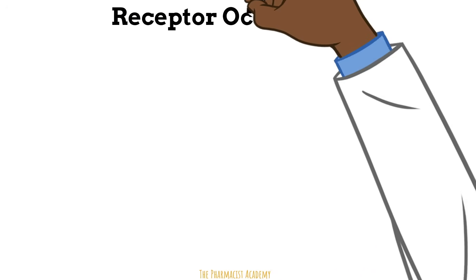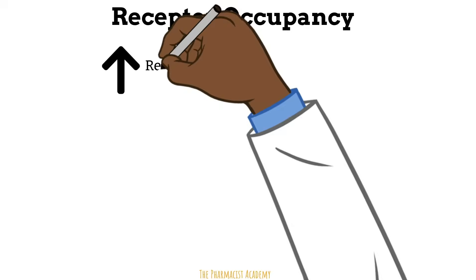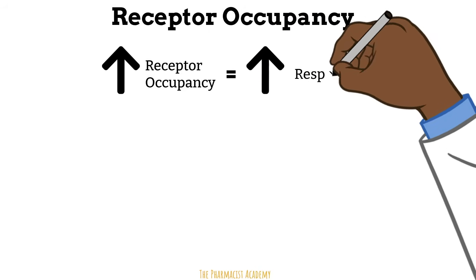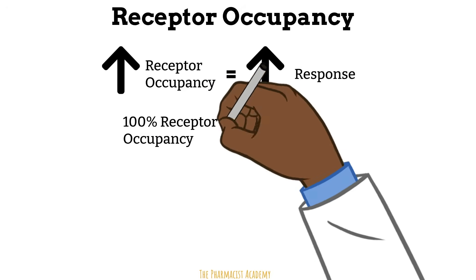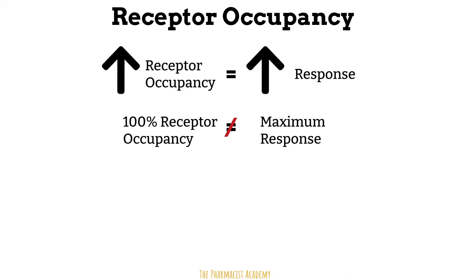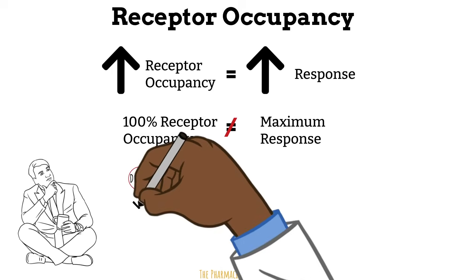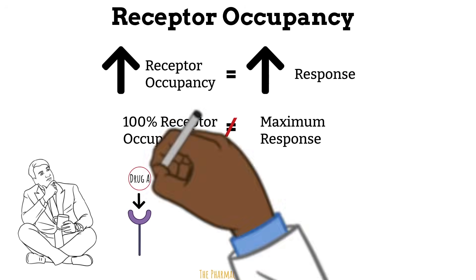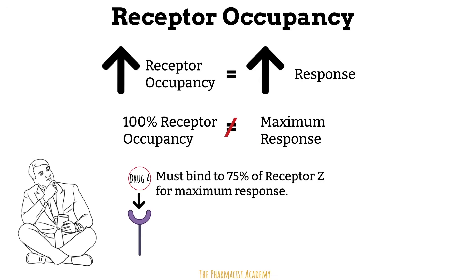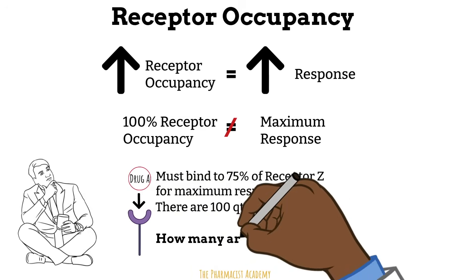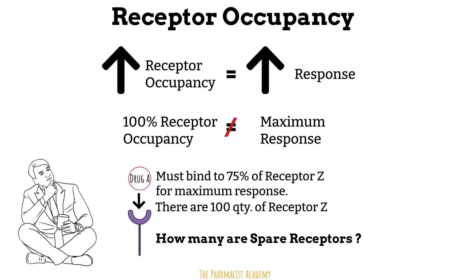Next is receptor occupancy. The more receptors that are occupied by the drug, the greater the pharmacodynamic response. But all receptors do not need to be occupied to get a maximum response — this is due to the concept of spare receptors, which are receptors that exist in excess of those required to produce a full effect. For example: drug A interacts with receptor Z but needs to bind to 75% of receptor Z to get a maximum response. There are 100 total receptor Z. How many are spare receptors? The answer is 25.